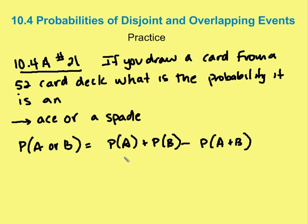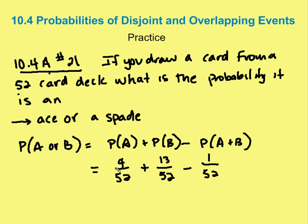P(A) is 4/52, since there are 4 aces in 52 cards. P(B) is 13/52, since there are 13 spades in the deck. P(A and B) is 1/52, since there is only one ace of spades. So P(A or B) = 4/52 + 13/52 − 1/52 = 16/52, which reduces to 4/13. That's the final answer.